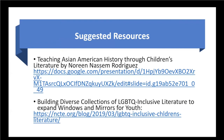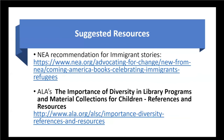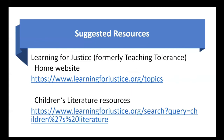In the handout that will be available, I've included some websites so you can find additional titles dealing with Asian Americans, LGBTQ, diversity in general, and immigrants. I did want to point out Learning for Justice, which was formerly called Teaching Tolerance. I was uncomfortable with the idea of Teaching Tolerance — tolerance implies a negativity — and apparently they had enough similar responses that they changed the name to Learning for Justice, which I think is much better. They have a wonderful website with lots of teaching resources and in particular a webpage for teaching children's literature.